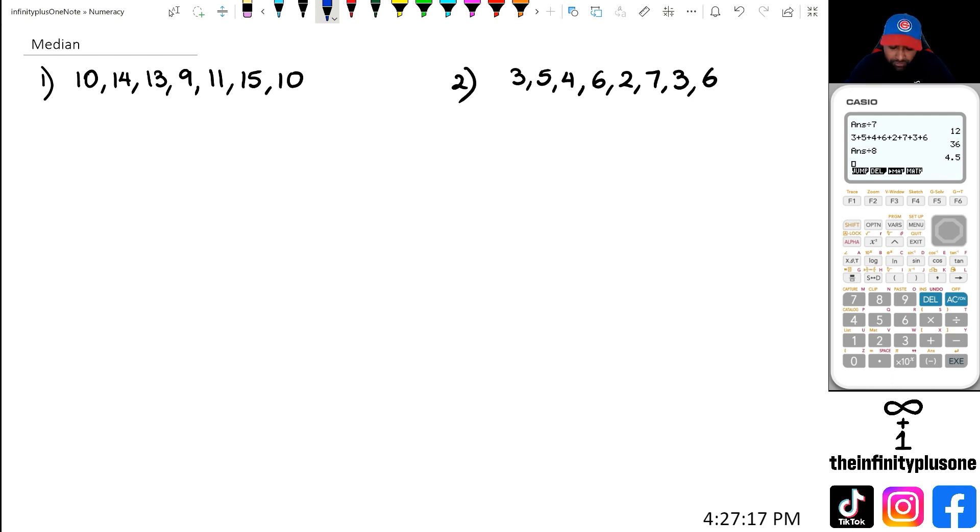So if we look at question one here, we've got to write these numbers from smallest to largest. So we're going to have the smallest number, which is 9, then we have a 10, 10, 11, 13, 14, and 15.